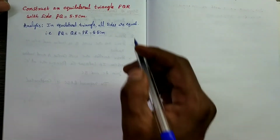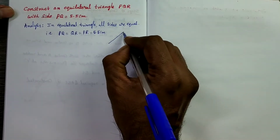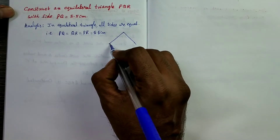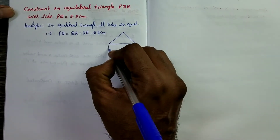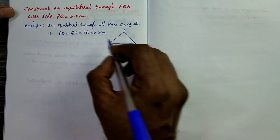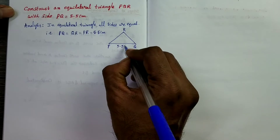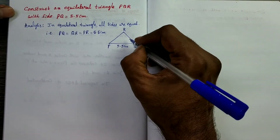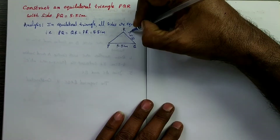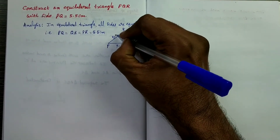So now draw a rough diagram of triangle PQR. PQR is an equilateral triangle, so all sides should be the same — 5.5 centimeters. Mark the measurements: PQ is 5.5 centimeters, QR is 5.5 centimeters, and PR is also 5.5 centimeters.